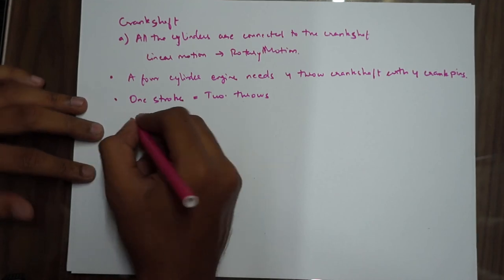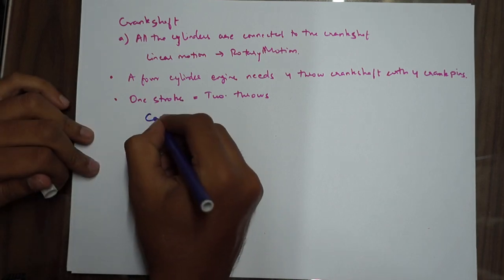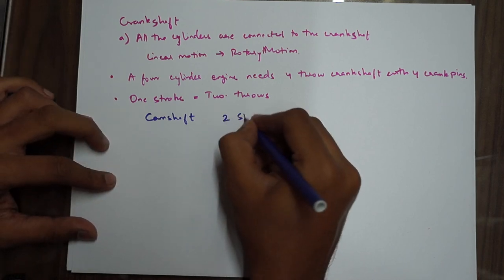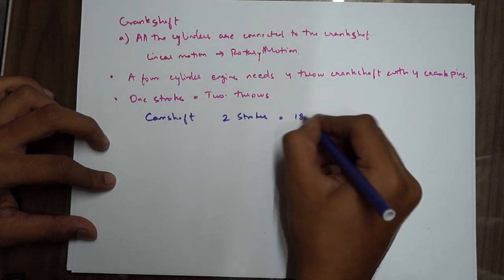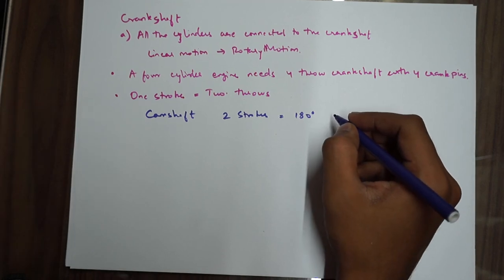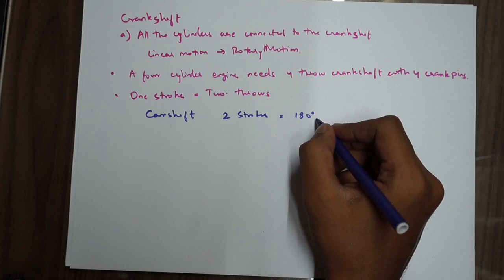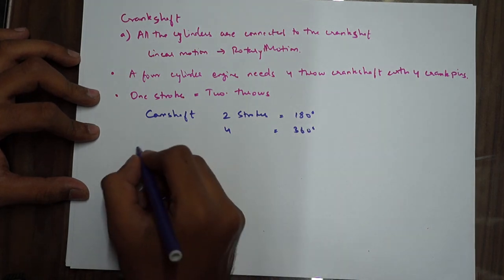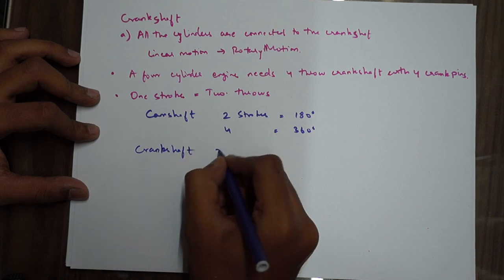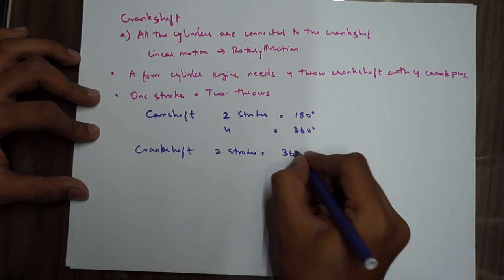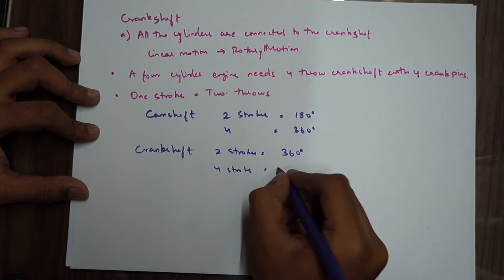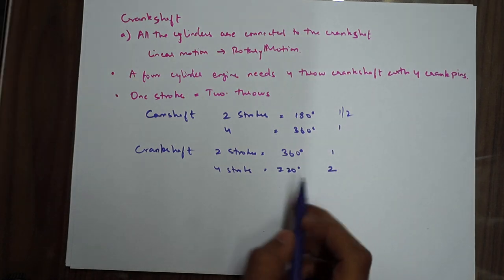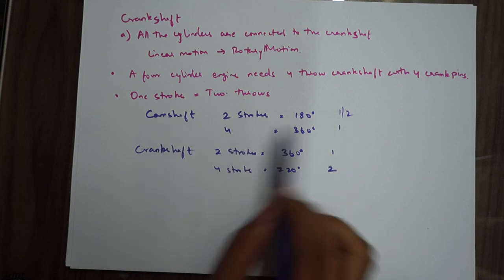For the camshaft: two strokes of the camshaft give 180 degrees of camshaft rotation, and four strokes give 360 degrees. In terms of the crankshaft, two strokes give 360 degrees and four strokes give 720 degrees. The rotation ratios are half, one, one, and two. This is the relationship between camshaft strokes and rotation, and crankshaft strokes and rotation.